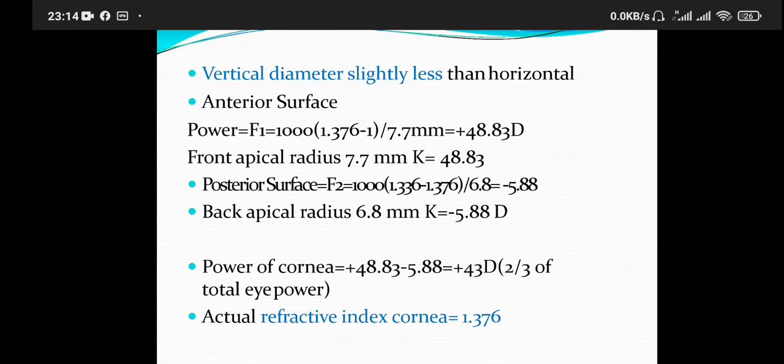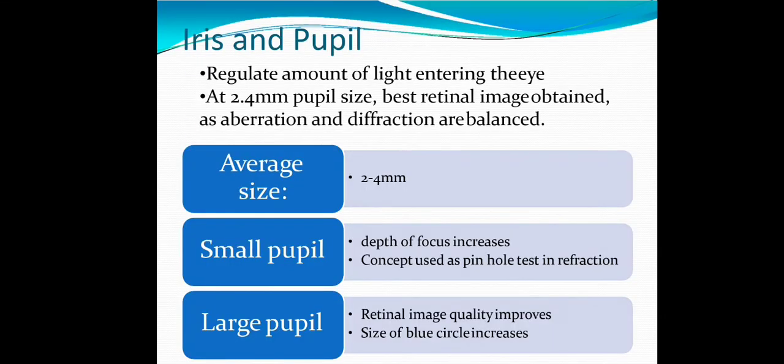The amount of light entering the eye at 2.4 mm pupil size produces the best retinal image as aberration and diffraction are balanced. Average size of pupil is about 2 to 4 millimeters.